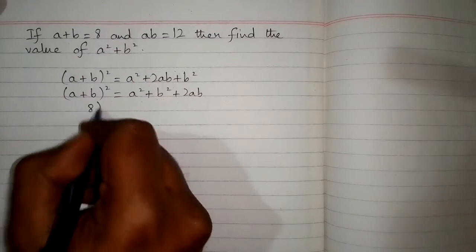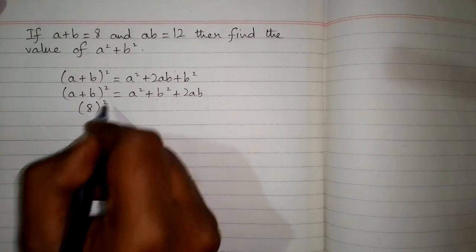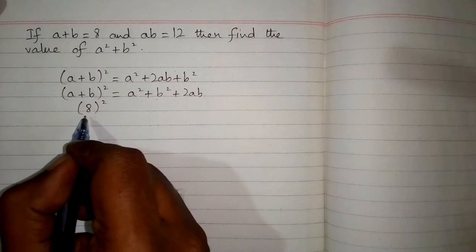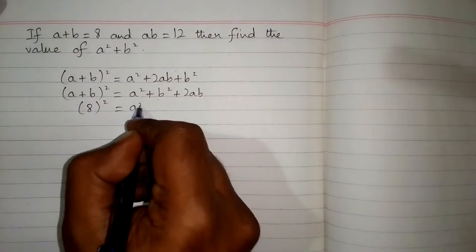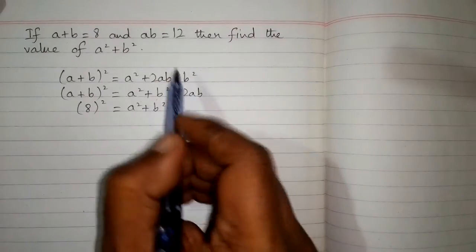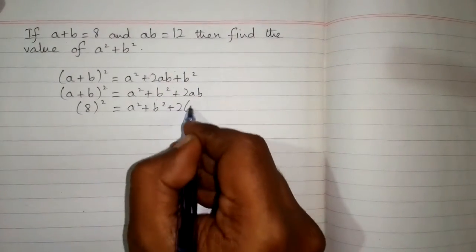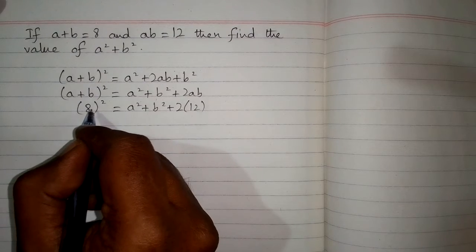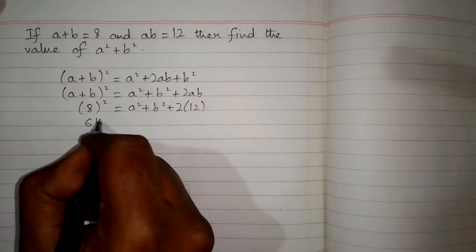So we write 8 in place of (a+b): 8² = a²+b²+2ab. Since ab is 12 as given in the question, and 8² is 64,